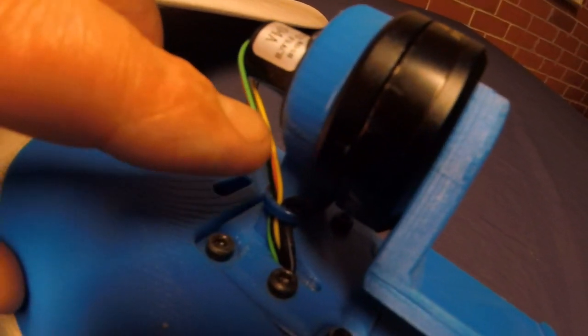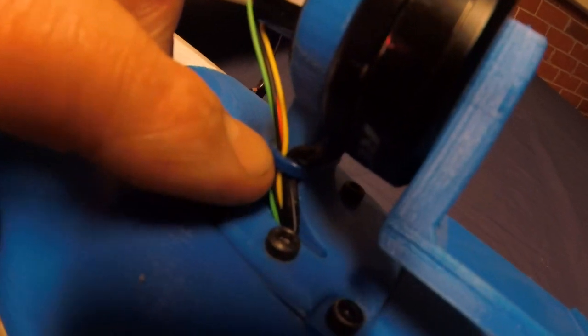The wires from the slip ring go down here. There's a zip tie to hold them and they go through a hole and into the fuselage.